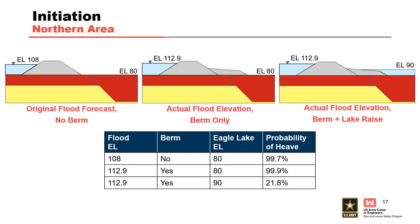The second case adjusted the flood elevation to the actual Mississippi stage of 112.9 feet, accounting only for the presence of the emergency berm. This scenario had a flood differential of approximately 33 feet — by far the largest loading experienced by the embankment — and a resulting probability of heave of 99.9%. The final case evaluated the actual conditions present during the flood: an elevation of 112.9 feet, the emergency berm, and Eagle Lake at elevation 90 feet. The flood differential for this final scenario was approximately 23 feet, with a probability of heave of 21.8%. Based on this analysis, the combination of the emergency berm and the Eagle Lake raise produced a significant reduction in the probability of initiation of backward erosion piping in the northern area.